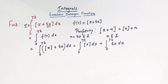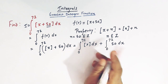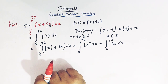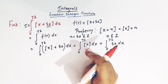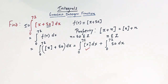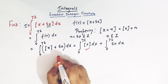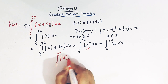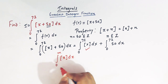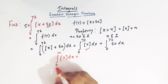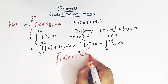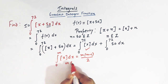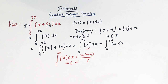Now we have to solve these two integrals. We will make use of one important result from definite integrals involving greatest integer function. We will solve this integral by making use of a direct result. The result is: suppose we have an integral from 0 to m of greatest integer of x dx. Then the direct value of these type of integrals is given by m(m−1)/2, where m belongs to the set of natural numbers.